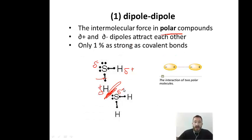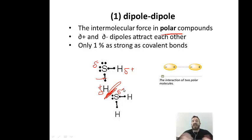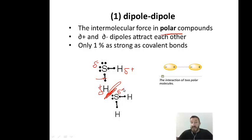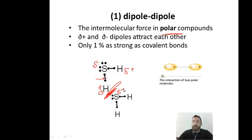One thing to keep in mind: in a dipole-dipole force, a partial positive and a partial negative dipole attract each other. These are not very strong forces — they're only 1% as strong as covalent bonds. You have a chemical reaction when you break the bond between sulfur and hydrogen, but if you break the bond between one H₂S and another H₂S you've changed its state, which is a physical change, not a chemical change. So: dipole-dipole, polar compounds, permanent dipole.